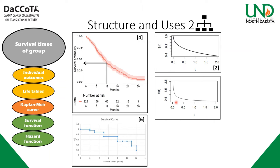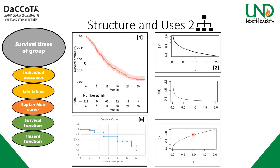Hazard functions are good, but an even more helpful visual tool is the cumulative hazard function — it shows how much the hazard accumulates. Here for the same data, it shoots up pretty quickly at the beginning showing a lot of hazard early on, then slows as the survival curve smooths. As you go on, it gets higher and higher until eventually everyone dies. You can calculate both discrete and smooth continuous hazard functions.